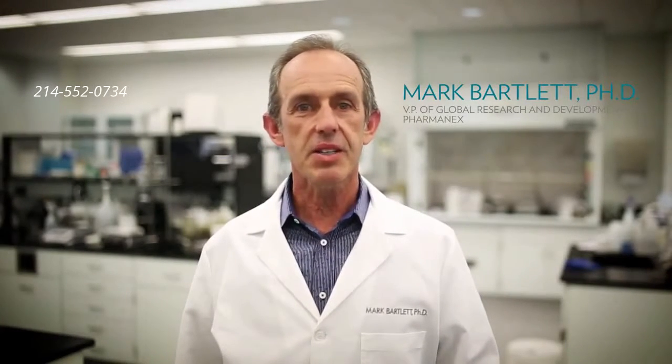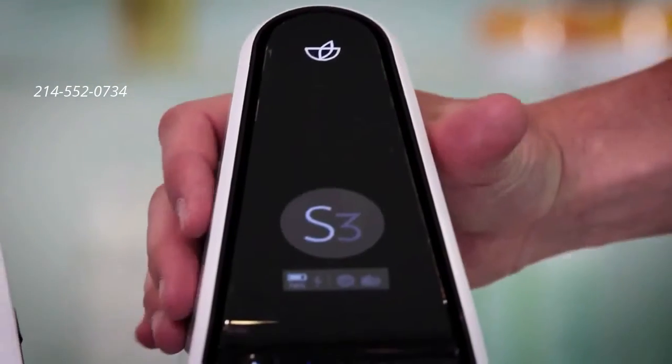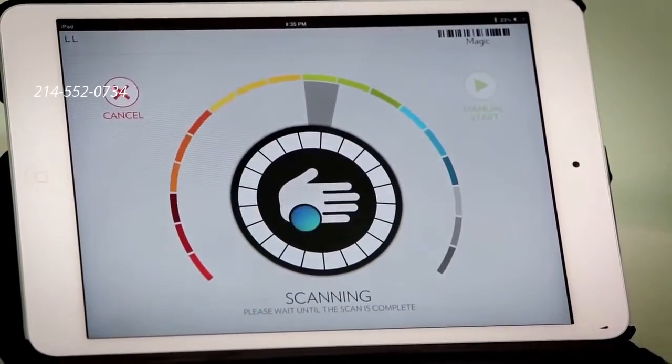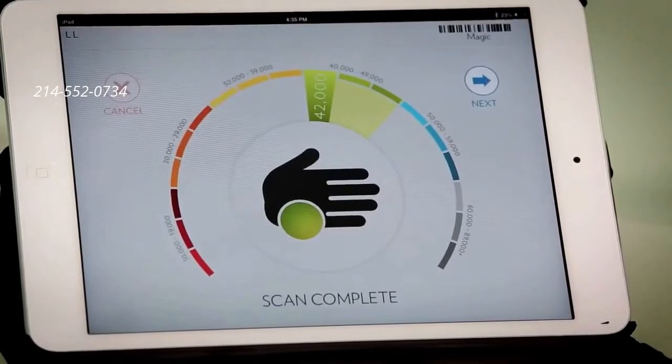The PharmaNX BioPhotonic S3 scanner gives you a skin carotenoid score that measures the carotenoid antioxidant level in your skin. In less than a minute you can find out if your supplements are giving you the antioxidant protection you need for optimal nutritional support.